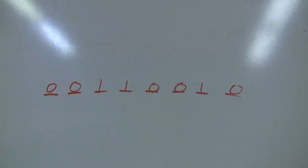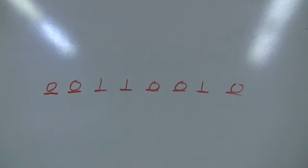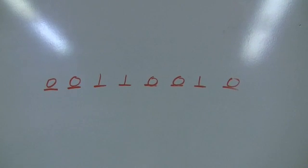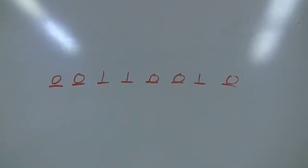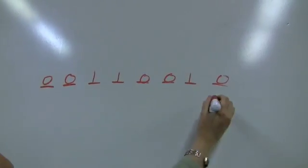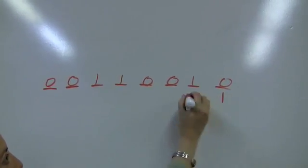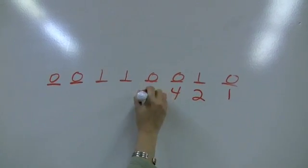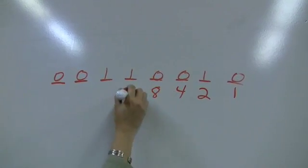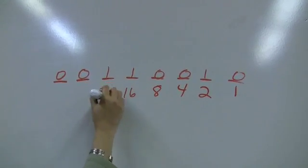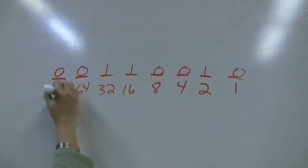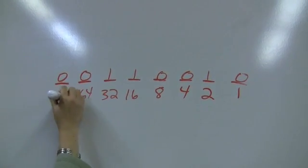The way that you start, as soon as you get a byte of information, is that you have to put the numbers underneath, which are 1, 2, 4, 8, 16, 32, 64, 128.